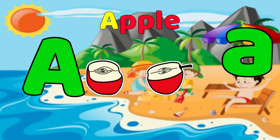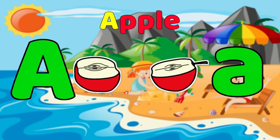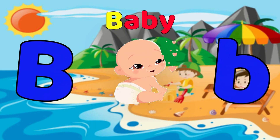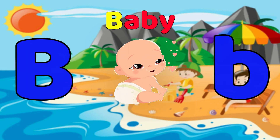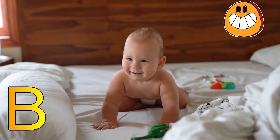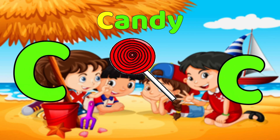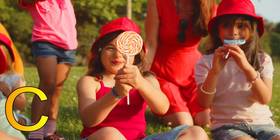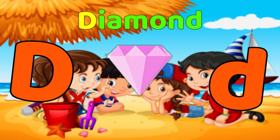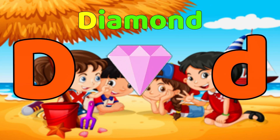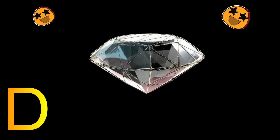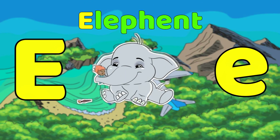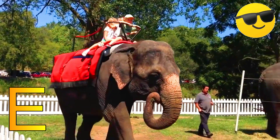A is for Apple. A, apple. A, apple. A, apple. B is for Baby. B, baby. B, baby. C is for Candy. C, candy. C, candy. D is for Diamond. D, diamond. D, diamond. E is for Elephant. E, elephant. E, elephant.